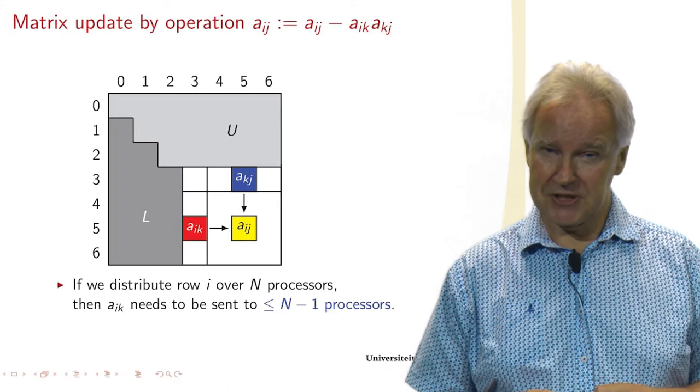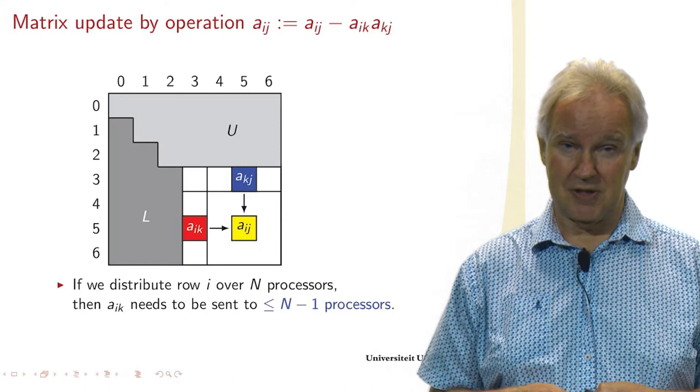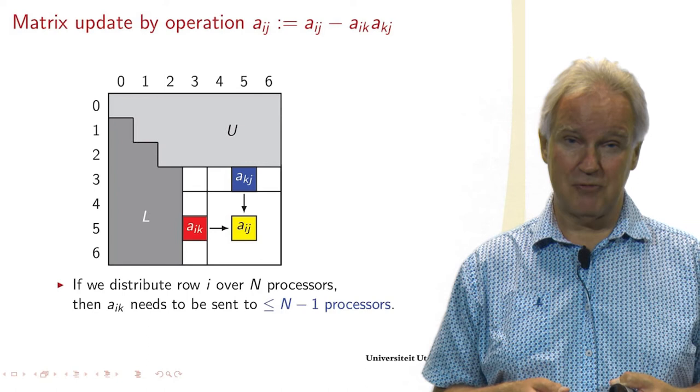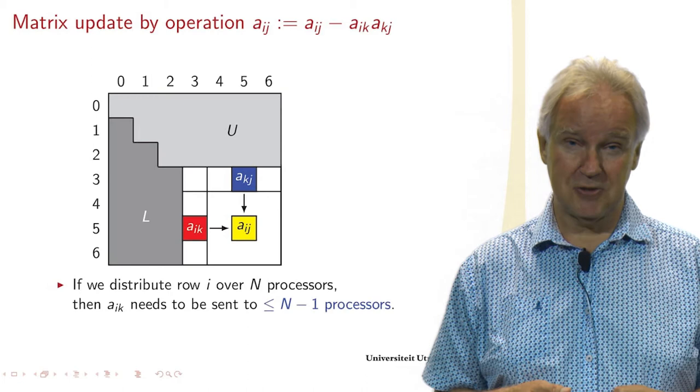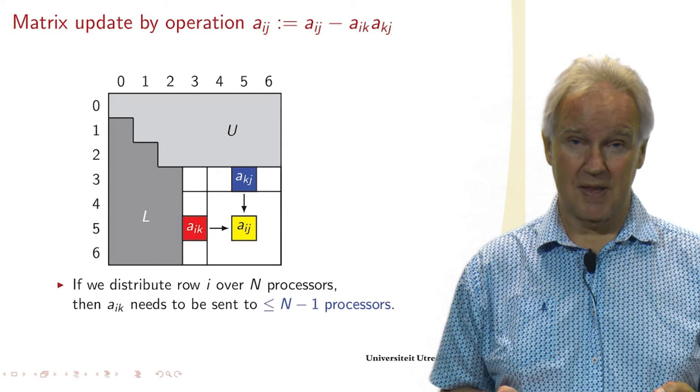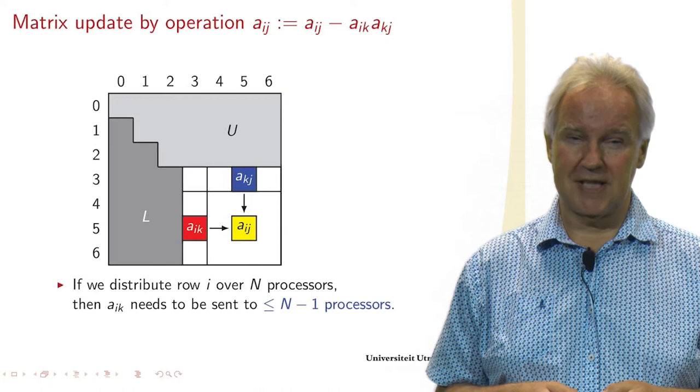So now if we decide to distribute a row I over N processors - N being probably less than P, the total number of processors - then we limit communication because AIK only needs to be sent to processors that have something in row I in this case. And that is very useful.